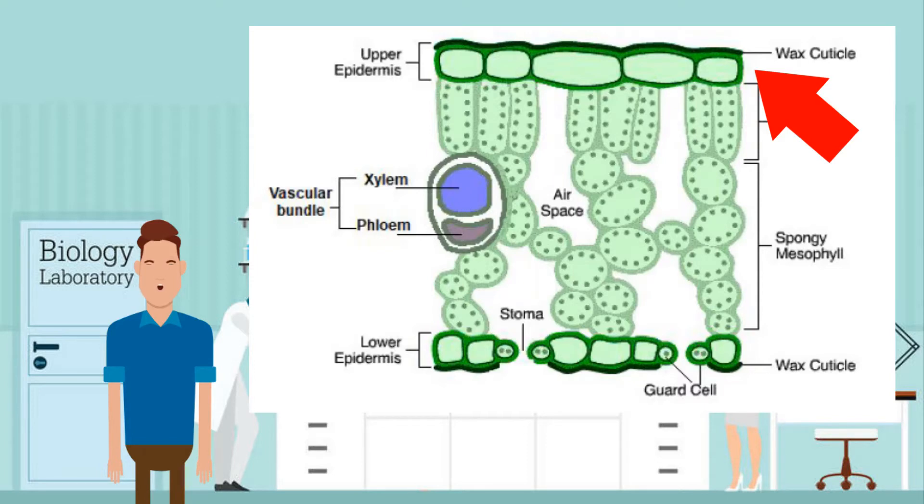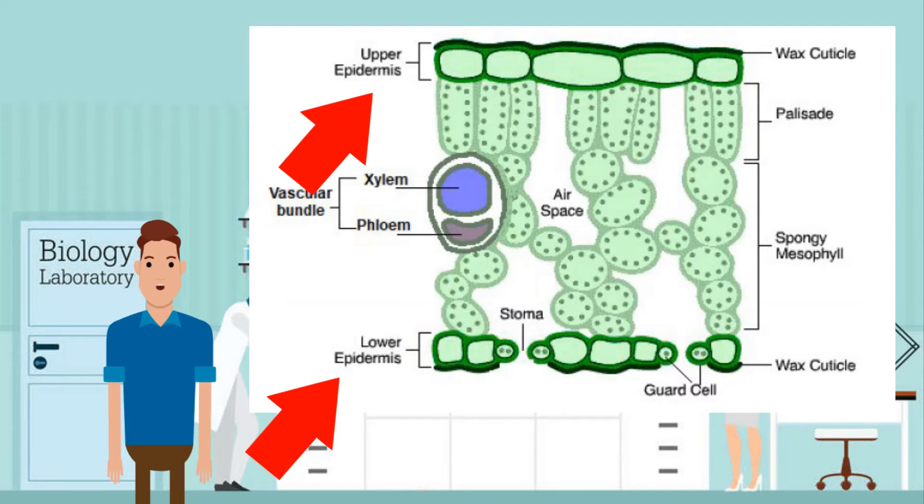Next, the epidermis, both upper and lower. These are single layers of cells that contain no chloroplasts so light can pass through to lower layers. They act as a protective outer layer.